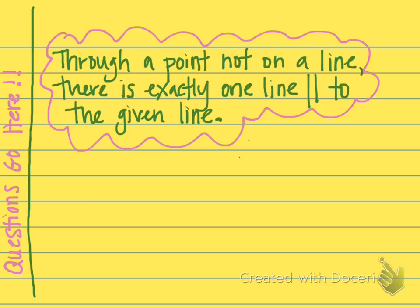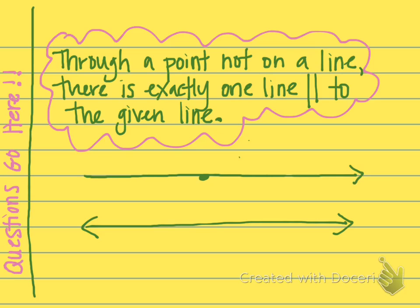This first theorem is called the parallel postulate, and it makes a lot of sense. It says through a point not on a line — so we've got a line and a point that's not on it — there is exactly one line parallel to the given line. Through this point, there's exactly one line that can be parallel to that given line.